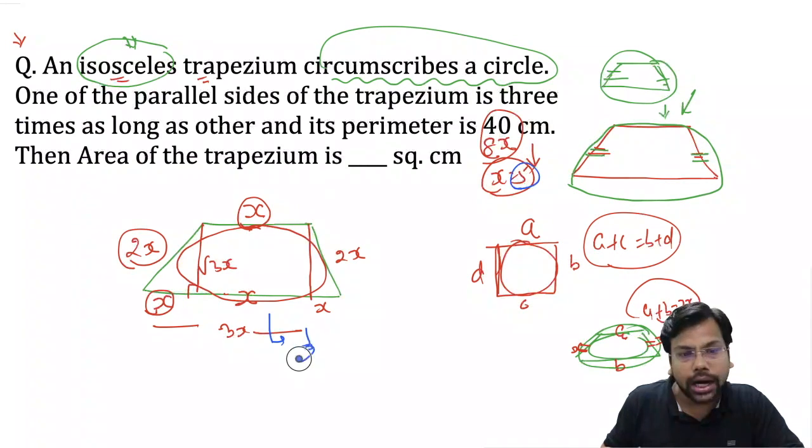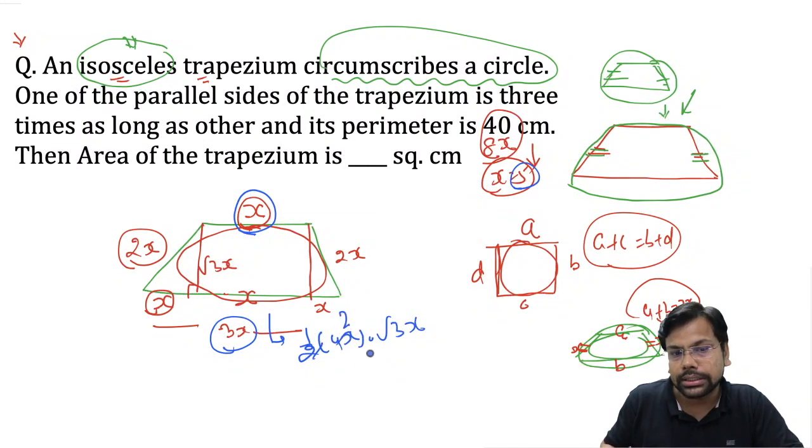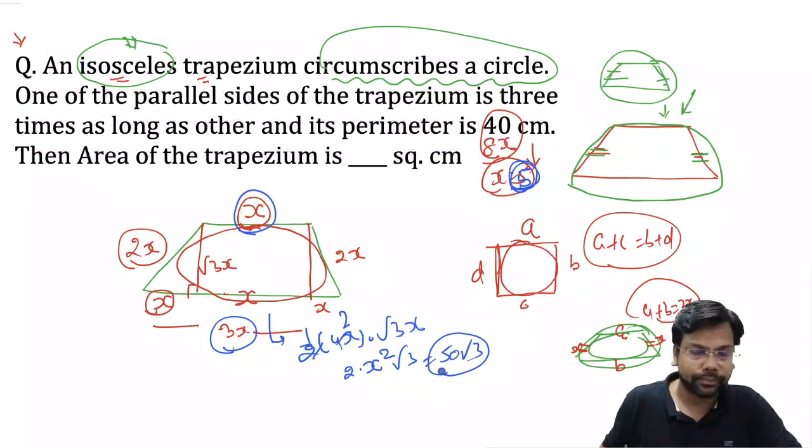Area of trapezium is half into sum of parallel sides, which is 4x, into height, which is root 3x. So the answer is x squared into 2 root 3. And x is 5, so the answer is 50 root 3.